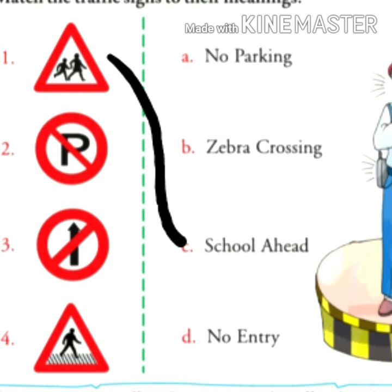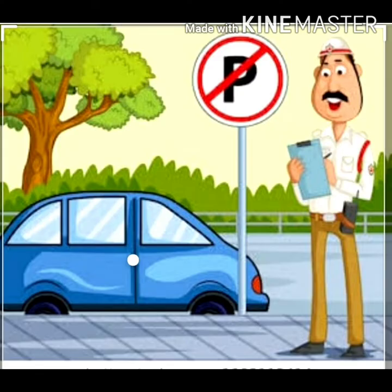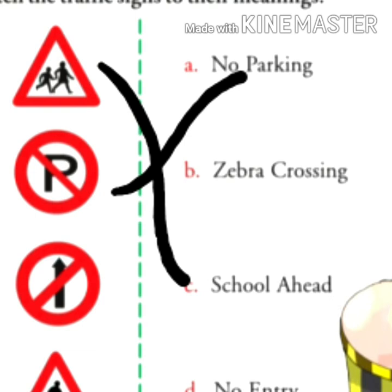For number two, in this sign you can see that over the letter P, one bar is drawn. P means park — parking of a vehicle. Since there is a bar over P, the meaning of this sign is parking is not allowed. So the answer for number two is no parking.